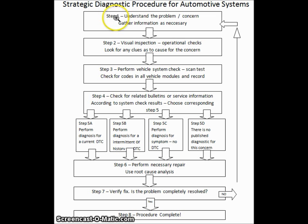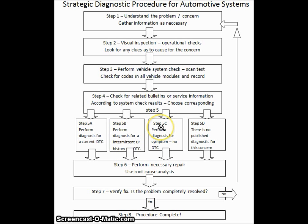First, we will perform step one: understand the problem. Then step two: perform a visual inspection, operational checks, looking for any clues. Then step three: perform the vehicle system check, including a scan test. And step four: check for related bulletins or service information, and according to the system check results, choose a corresponding step five — either A, perform diagnosis for a current DTC; B, perform diagnosis for an intermittent or history DTC; C, perform a diagnosis for a symptom with no DTC; or D, there is no published diagnostic for this concern. Then we will move to step six, perform the necessary repair. And then step seven, verify the fix. Is the problem completely resolved? If the answer is no, we will return to step one. If the answer is yes, then we will move to step eight — the procedure is complete.